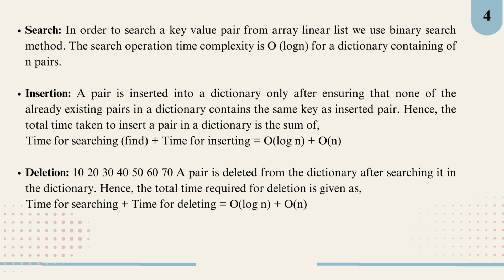Next insertion: when we add a new key-value pair, we first ensure there is no existing key that matches. The total time taken to insert involves time for searching (that is to find if the key already exists) plus time for inserting (that is placing it in the sorted position). This adds up to O(log n) for the search and O(n) for insertion, resulting in O(log n + n) overall.